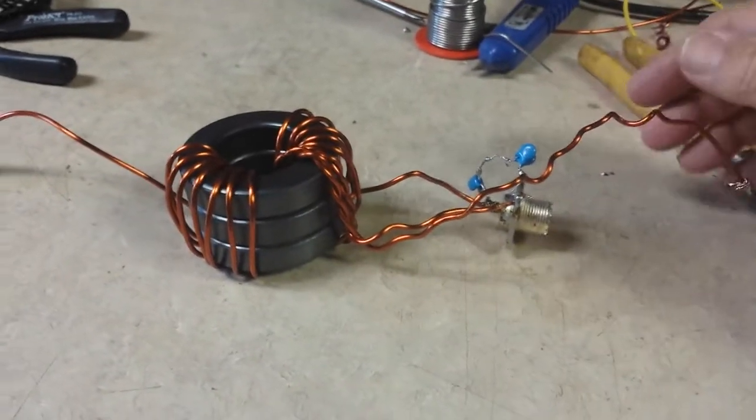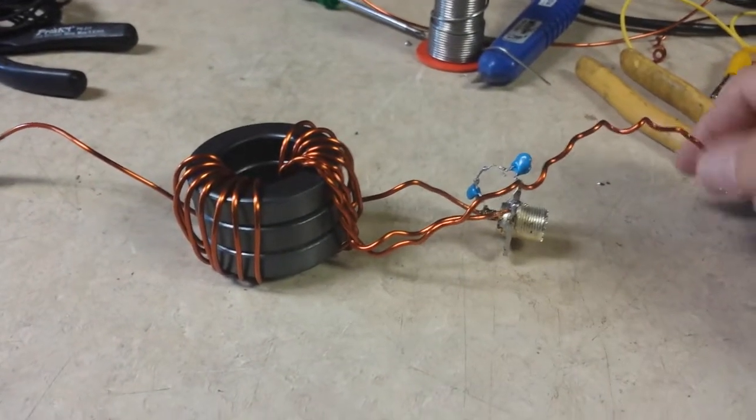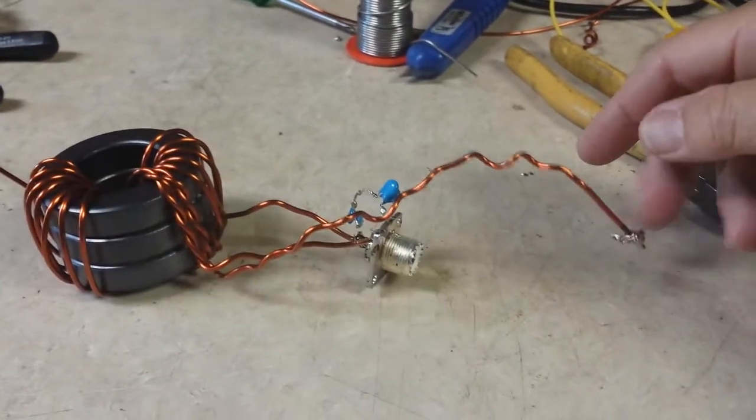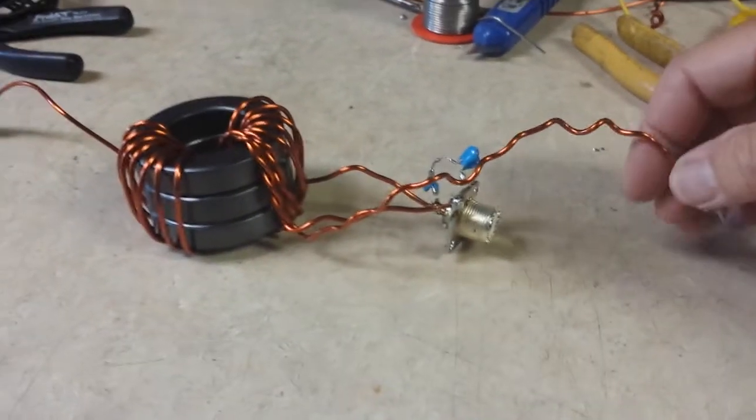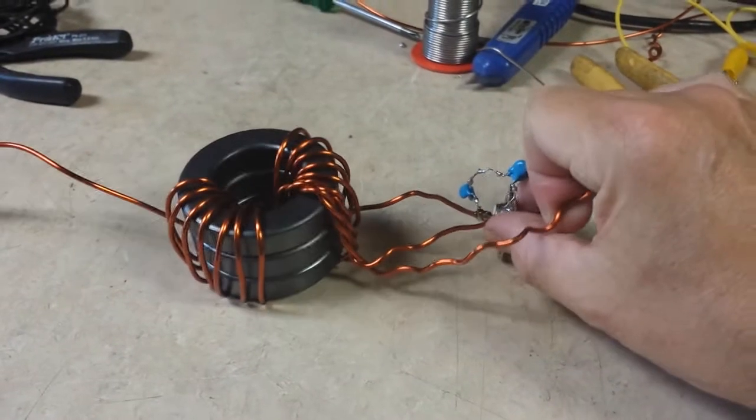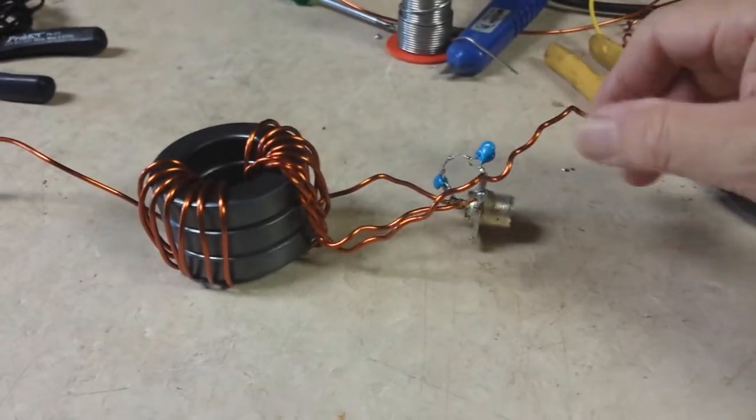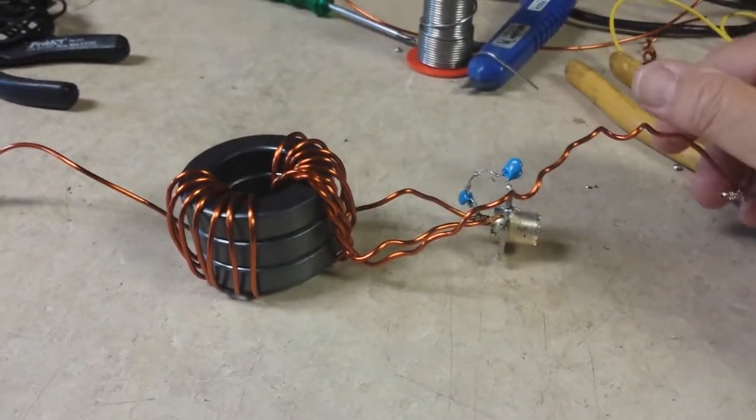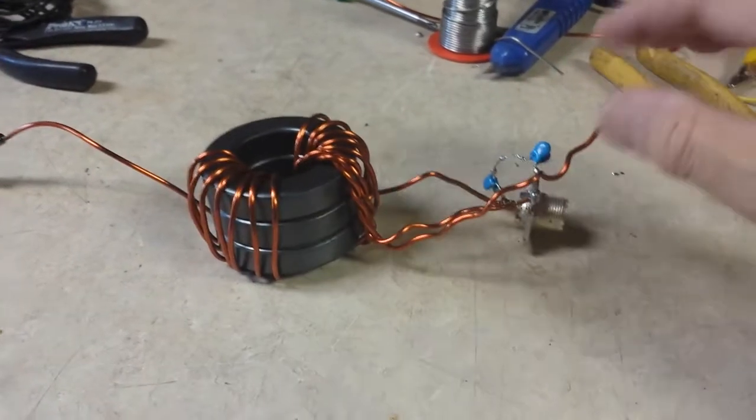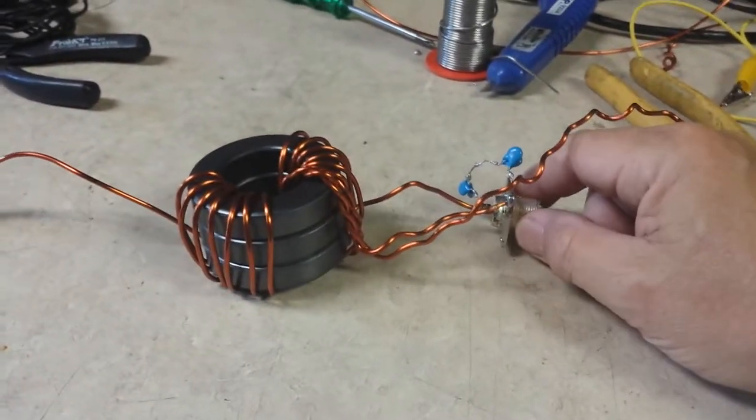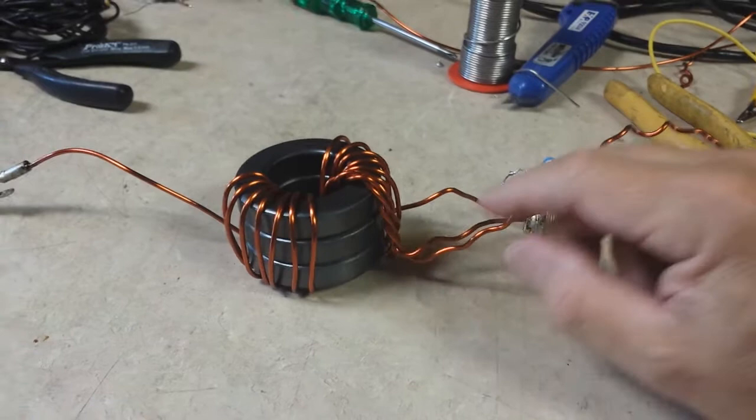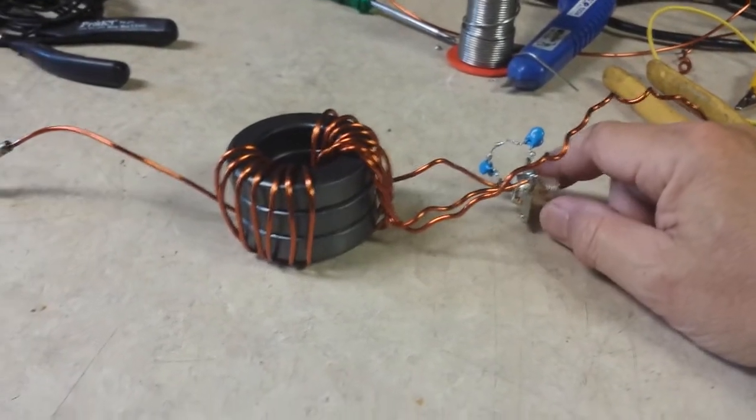unhooking the counterpoise completely and not grounding this, and lo and behold got the same readings. So nothing really made any difference. This was mounted out on a post...